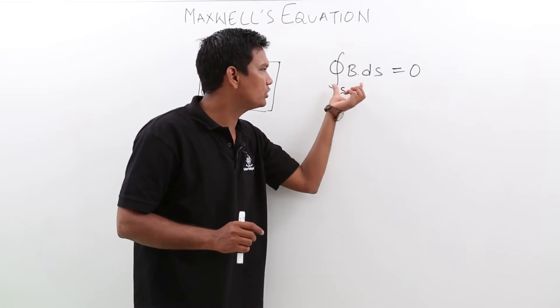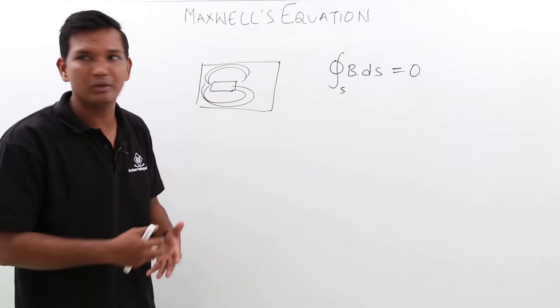Basically, it is saying that B·ds over the closed surface is 0. Let us try to understand the physical meaning of this.